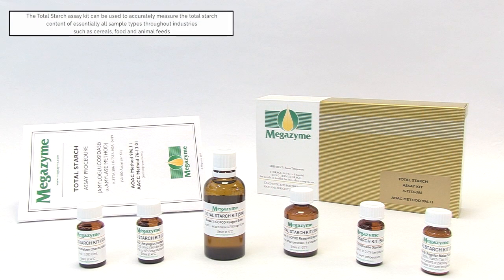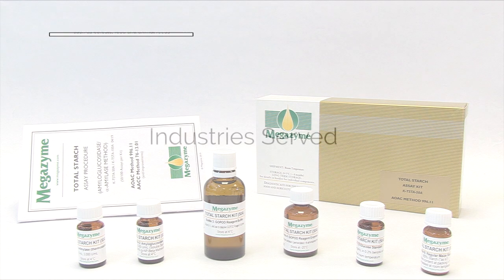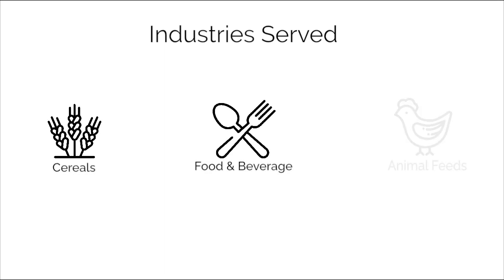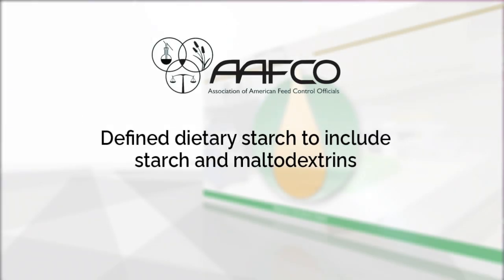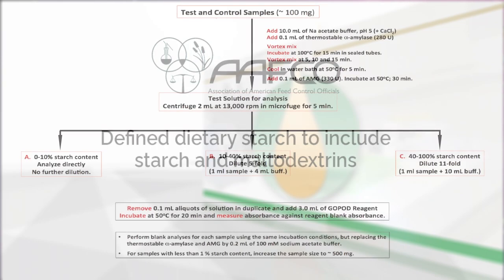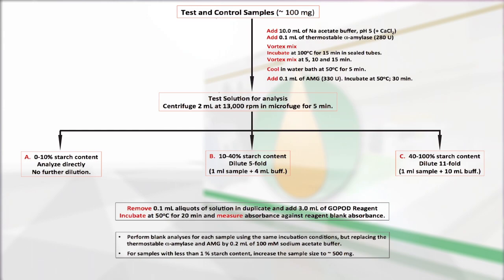The Total Starch Assay Kit can be used to accurately measure the total starch content of essentially all sample types throughout industries such as cereals, food and animal feeds. The Association of American Feed Control Officials, AAFCO, have defined dietary starch to include starch and maltodextrins, and this is the definition we use here, except that we also include free glucose, as this has the same dietary consequences.